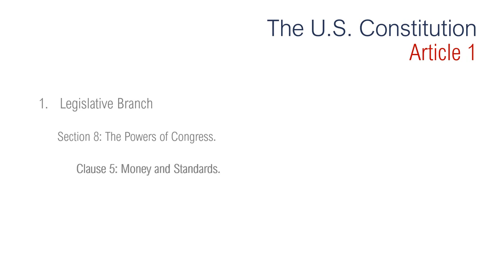Section 8, Clause 5 is regarding money and standards. It says that Congress mints coins and prints and circulates paper money. Congress can establish uniform measures of time, distance, weight, and the like. In 1838, Congress adopted the English system of weights and measures as our national standard instead of the metric system.